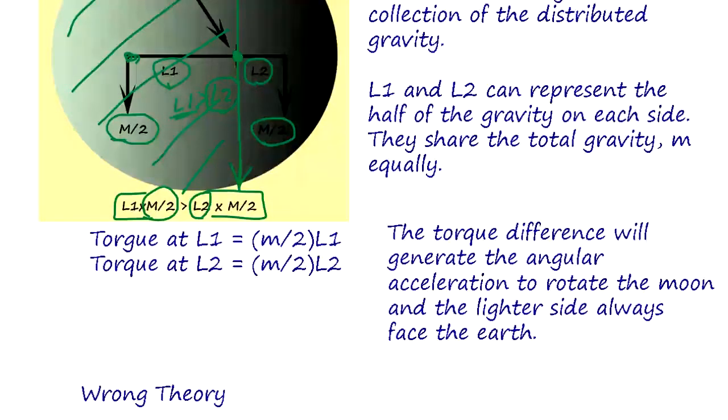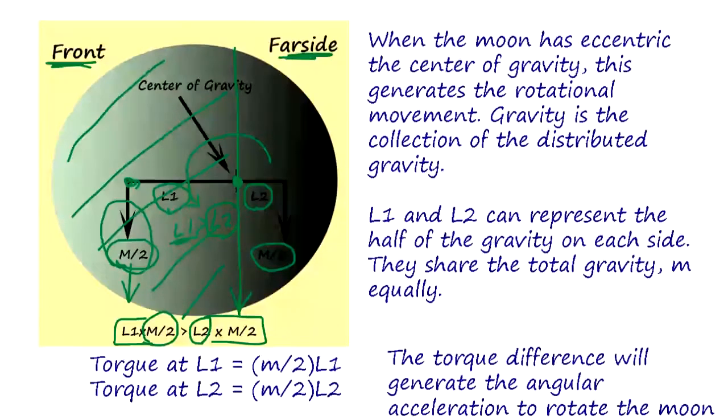So there is a difference in torque. So which one is larger? Of course, this side. So this one causes the moon to spin in this direction. And the heavy side becomes the far side, and the lighter side becomes the near side. And that's the reason why the moon is always adjusted to show only the light side. Because the center of gravity is on the heavy side at the far side.